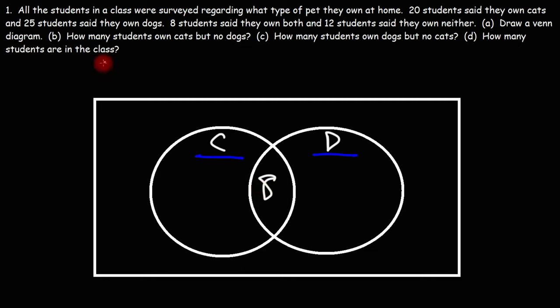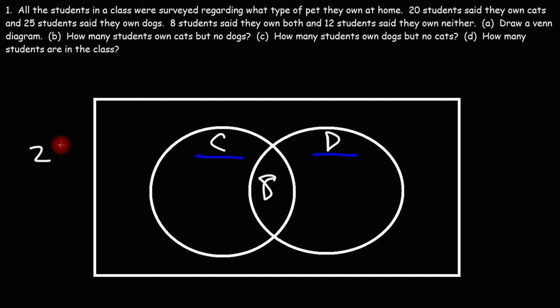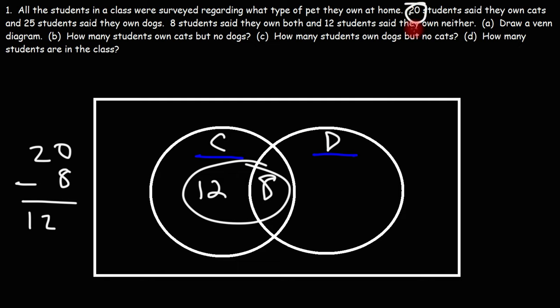Now, what about Part B — how many students own cats but no dogs? How many students own cats only? We have a total of 20 students who own cats. This includes the eight who own both. So to get those who own cats only, we subtract 20 minus 8, and that gives us 12. So we have 12 students who own cats only, and 8 own both cats and dogs, for a total of 20 who own cats.